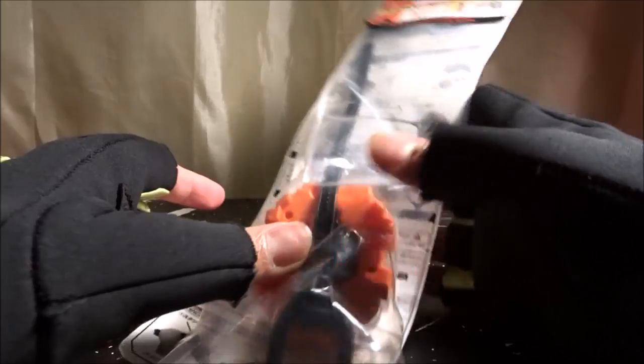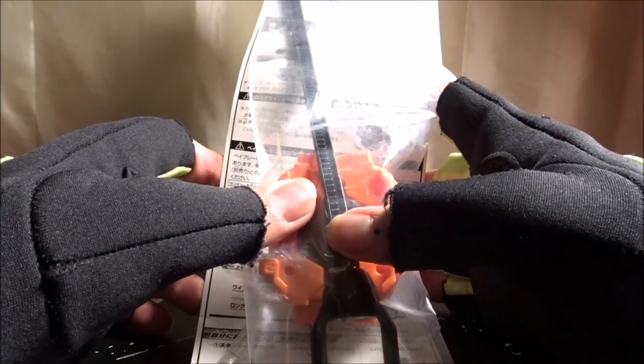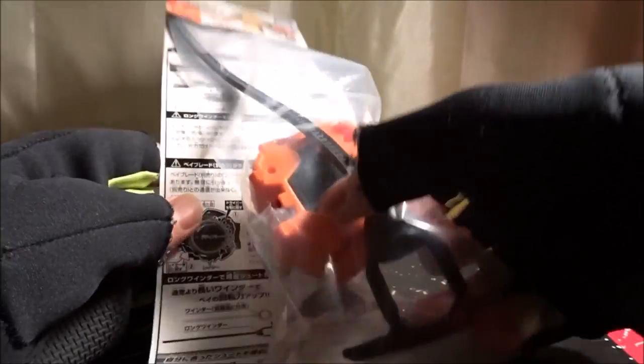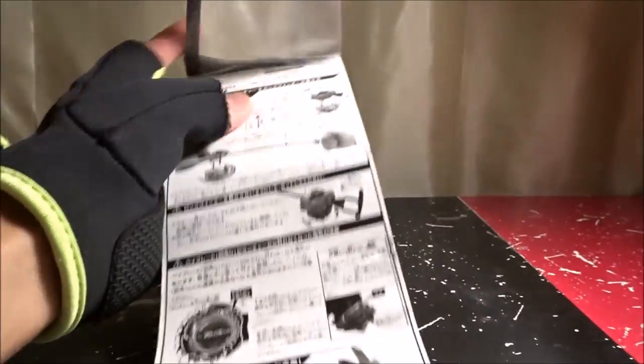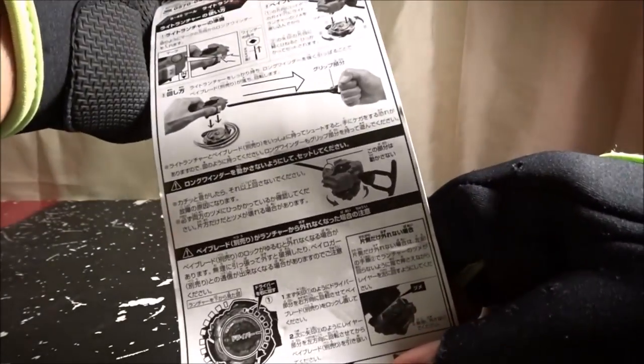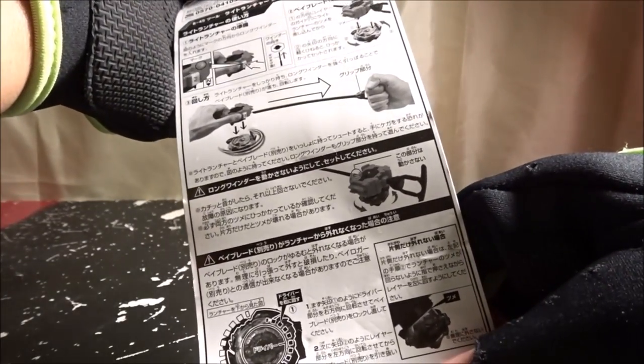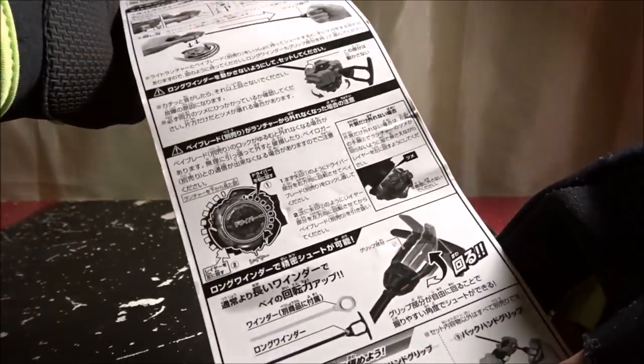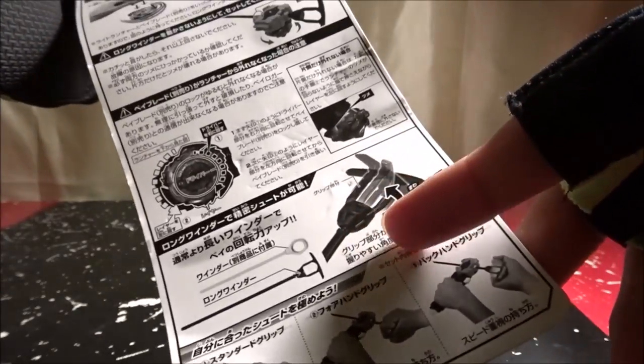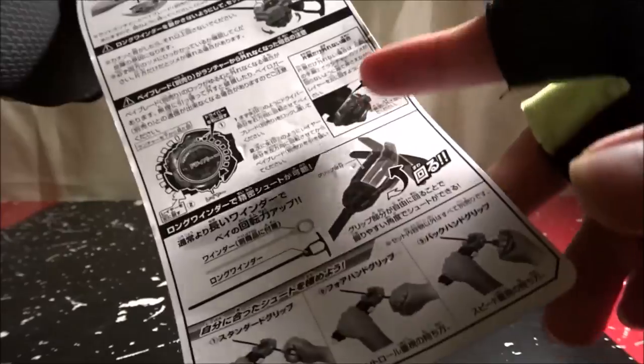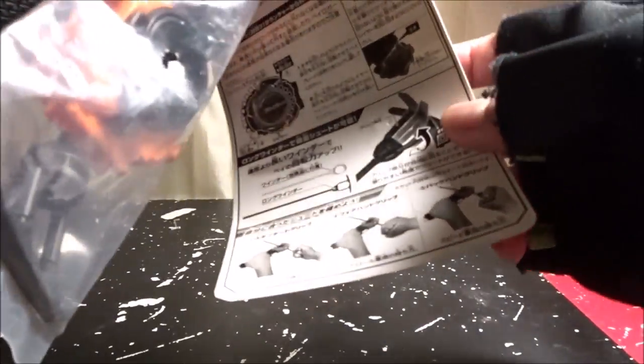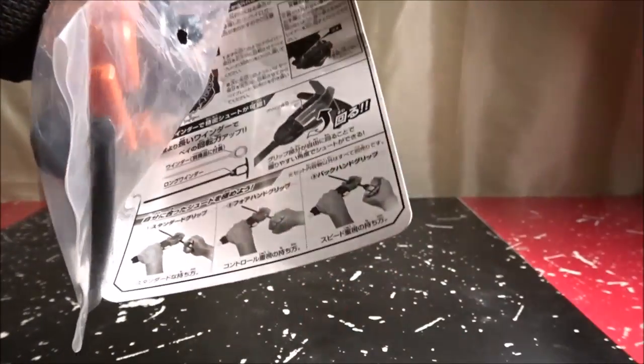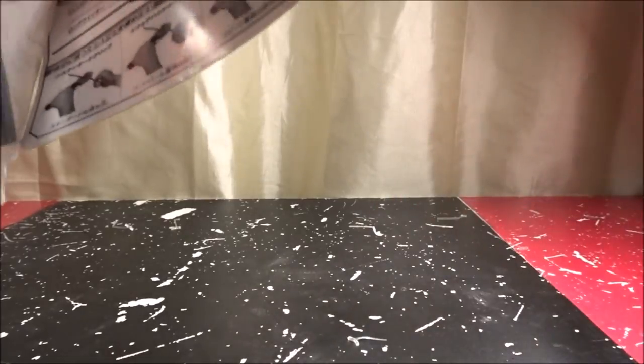This is the light launcher with the long winder here, took me a long time to realize that. Here's the back of it, pretty basic, it's just telling you how to rip, how to launch, and you can actually turn it, it's free spinning, that's cool. And you can connect it with the grip I have here.